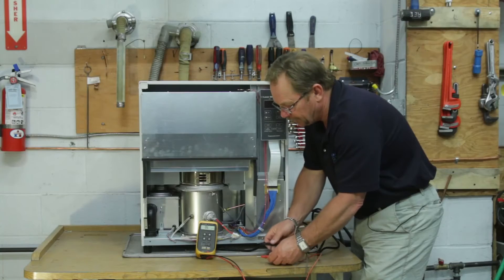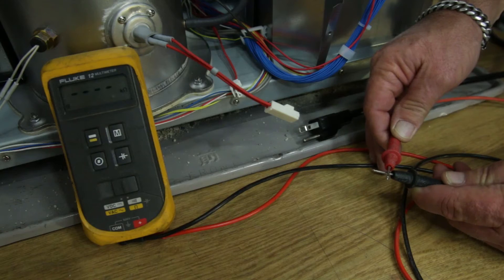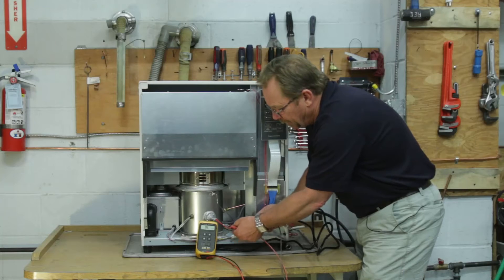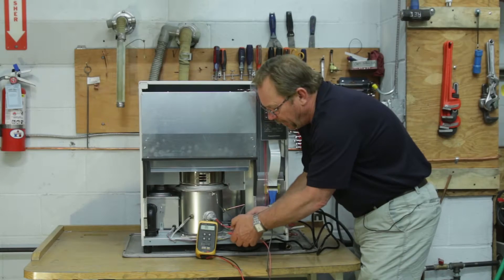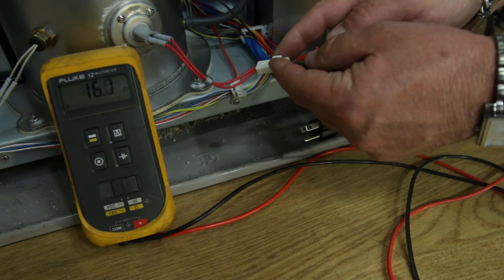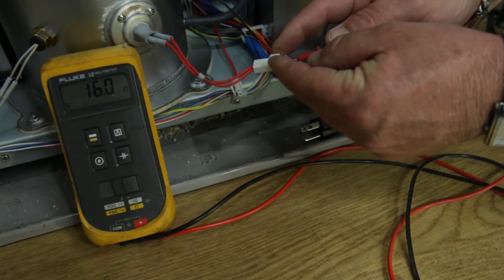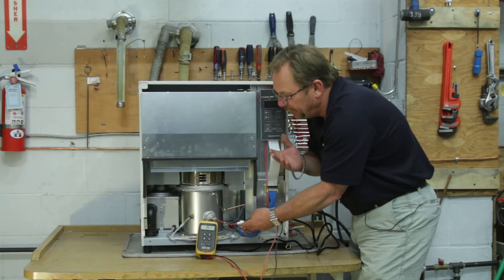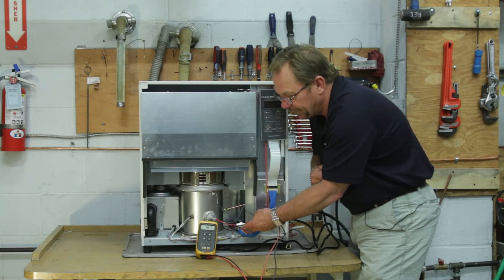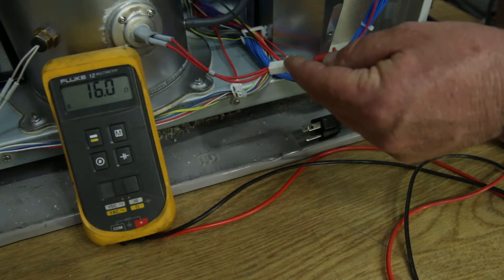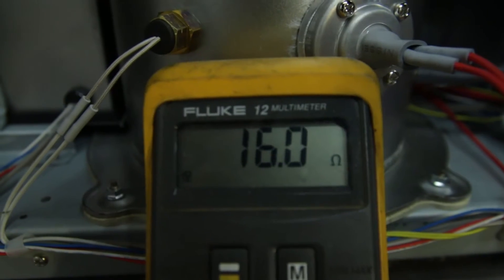Now we're going to touch our two leads together and we should get pretty close to 0.00, so we know that we're good. We come right in here and stick our probes gently in there, and we're getting our reading. Here we have 16 ohms of resistance, and we're looking between 16 and 18 ohms of resistance at room temperature. So we know that this igniter is exactly at factory spec.